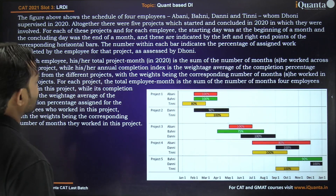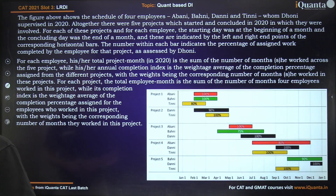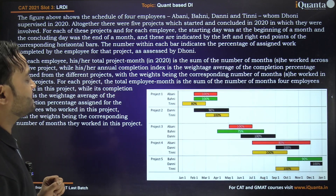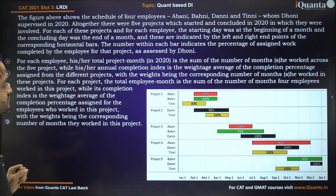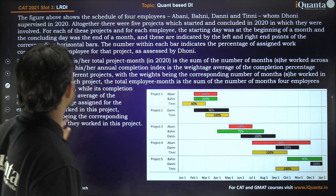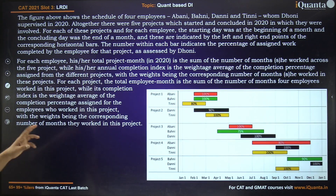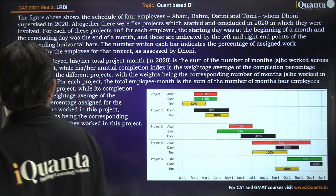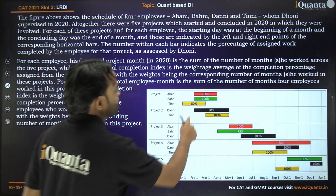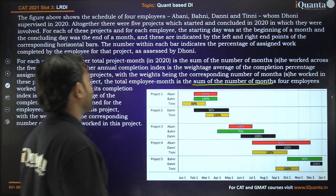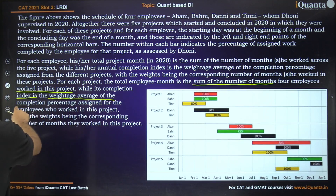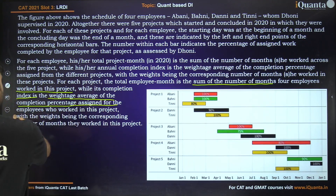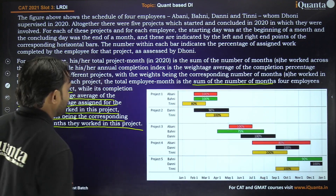For each employee, his or her total project month is the sum of the number of months they worked across the five projects, while the annual completion index is the weighted average of the completion percentage assigned from different projects, with the weights being the corresponding number of months he or she worked in those projects. For each project, the total employment is the sum of the number of months the four employees worked in that project, while its completion index is the weighted average of the completion percentages assigned for employees who worked in that project, with the weights being the corresponding number of months they worked.